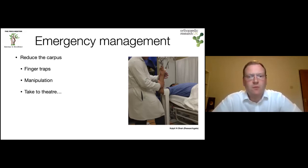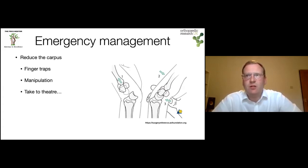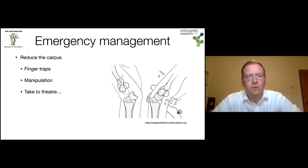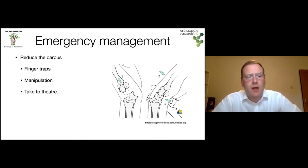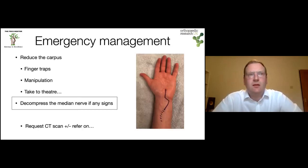These can be difficult to reduce closed. What you're trying to do is perch the capitate back into the concave surface of the lunate. It's really important that the thumb supports the lunate from the start of your manipulation — you do not want to convert a Mayfield 3 into a Mayfield 4 by pushing the lunate into the carpal tunnel. If you're not successful in the emergency department and sedation isn't available to reduce muscular tone, take the patient to theatre. If there are any signs of median nerve compromise, decompress the median nerve.